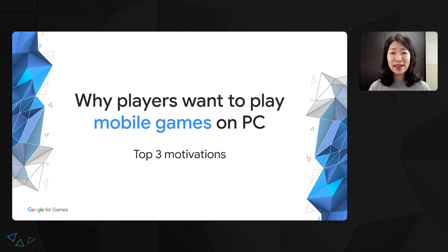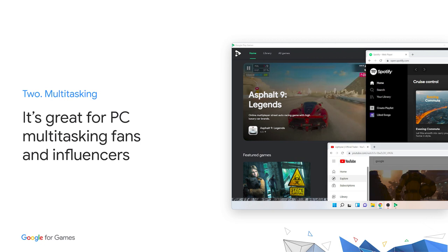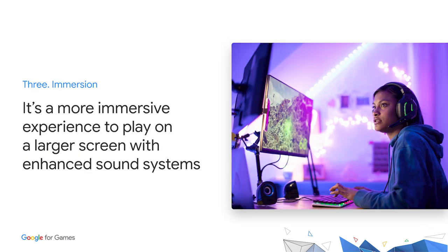To better understand what motivates gamers to play games on multiple platforms, Google researchers gathered data from thousands of players and found three major motivations. The first motivation is approachability — because mobile games were originally designed for on-the-go play, their rules and environments are less complex, so it's easier to quickly jump in and make progress, and using a mouse and keyboard can also make some mobile games more fun. The second motivation is multitasking — some gamers like to switch to different services such as YouTube and Discord to get tips on gameplay, chat with friends, or live stream their sessions.